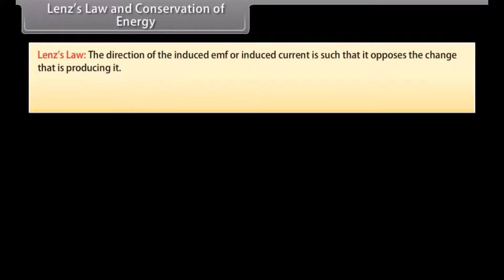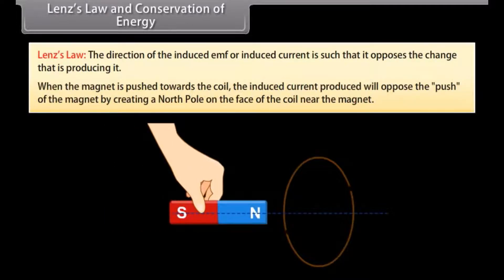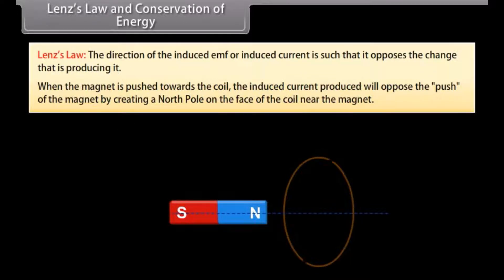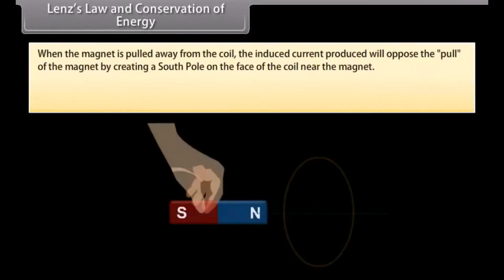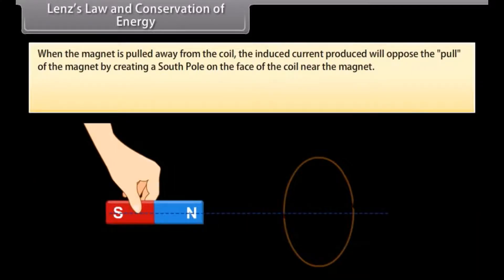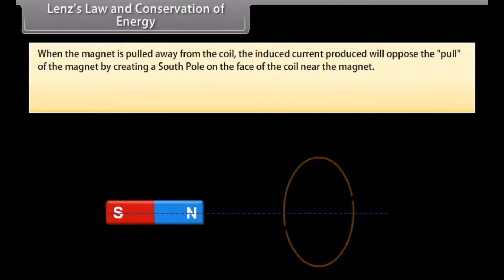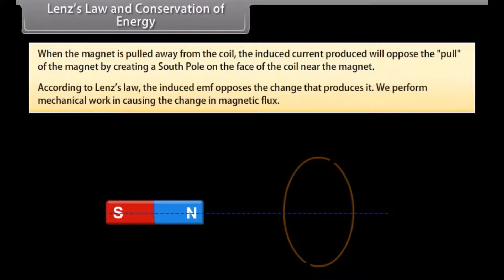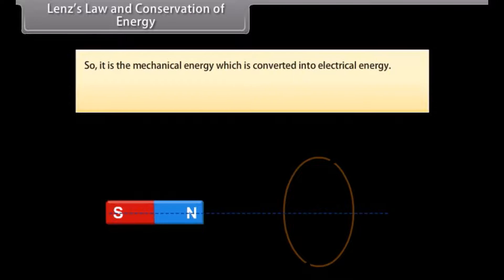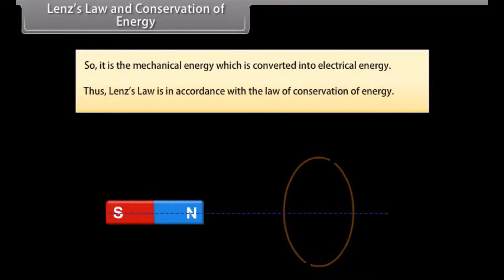Lenz's Law states that the direction of the induced EMF or induced current is such that it opposes the change that is producing it. When the magnet is pushed towards the coil, the induced current will oppose the push by creating a north pole on the face of the coil near the magnet. When the magnet is pulled away from the coil, the induced current will oppose the pull by creating a south pole on the face of the coil near the magnet. We perform mechanical work in causing the change in magnetic flux, so it is mechanical energy that is converted into electrical energy. Thus, Lenz's Law is in accordance with the law of conservation of energy.